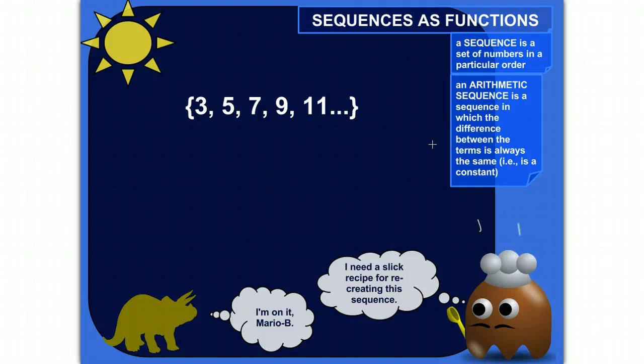Alright, this one's cool, you'll like this. So a sequence is a set of numbers in a particular order. Here we've got a sequence that are in order, the numbers are getting bigger. It goes from 3 to 5 to 7 to 9 to 11.